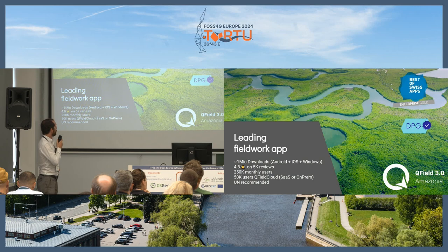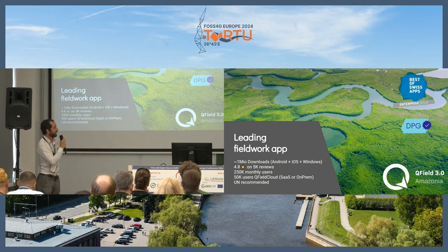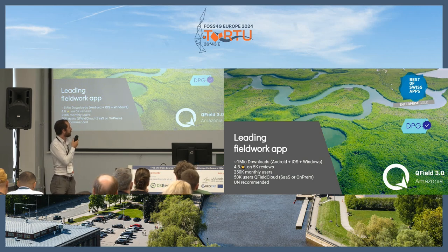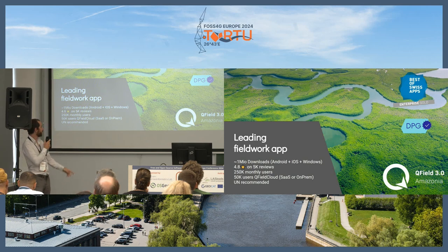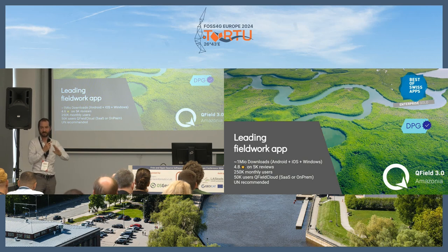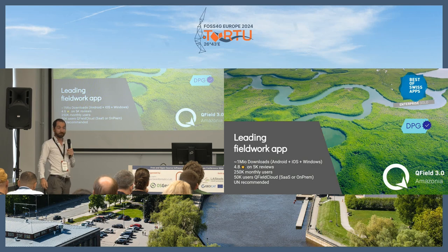So QField — from version 3 Amazonia, and meanwhile it's 3.3 Darien — is a digital public good, which is United Nations approved, has won some awards, best of Swiss apps in the enterprise category. We have 1 million downloads — and it's not only on Android and iOS and Windows, it's actually on Android and on top of that iOS, Windows, Mac OS and more. Quite good ratings — we're quite happy with what it is.